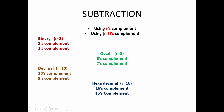Next is binary subtraction. Generally, subtraction is performed using the complement method — not normal subtraction. The methods are R's complement and R minus 1's complement, where R is the radix or base. For binary subtraction, the radix is 2, so the methods are 2's complement and 1's complement. For octal, radix is 8, giving 8's and 7's complement. For decimal, the methods are 10's and 9's complement. For hexadecimal, R is 16, giving 16's and 15's complement.